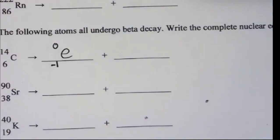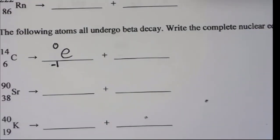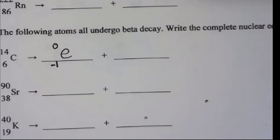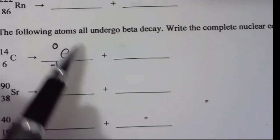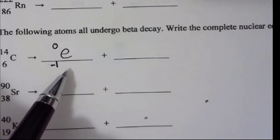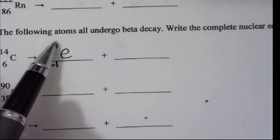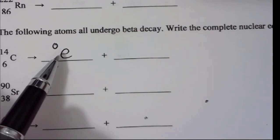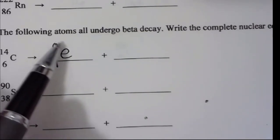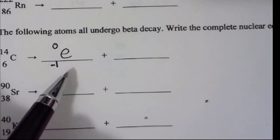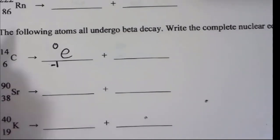It has an atomic number of minus one. The reason is that a neutron transforms into a proton and a high-energy electron, or beta particle. Because we lose a neutron and gain a proton, the overall mass stays the same, but the atomic number increases. So the atomic number is now seven.